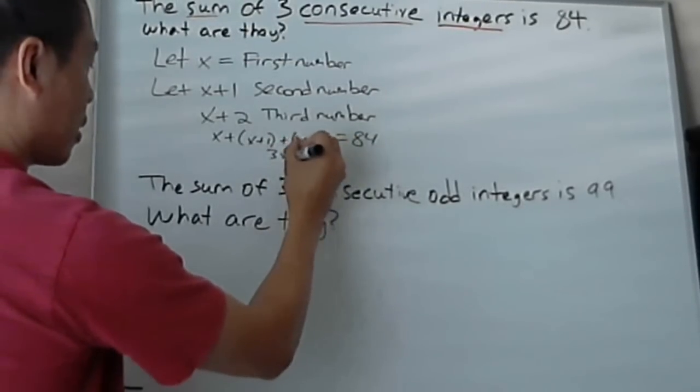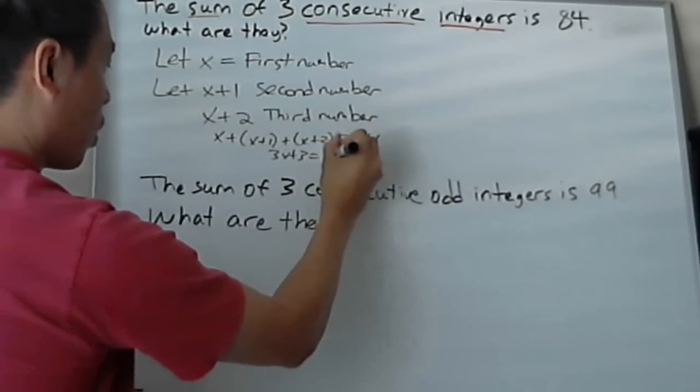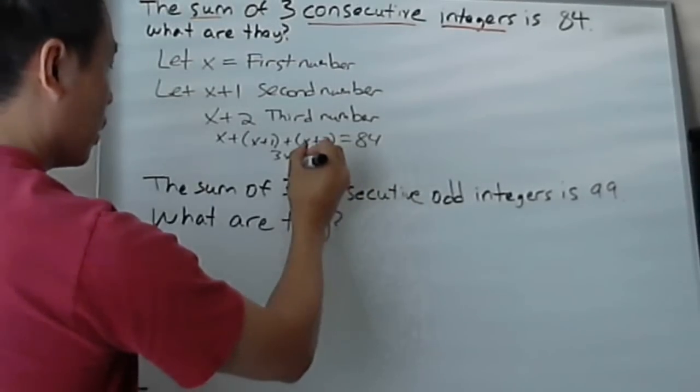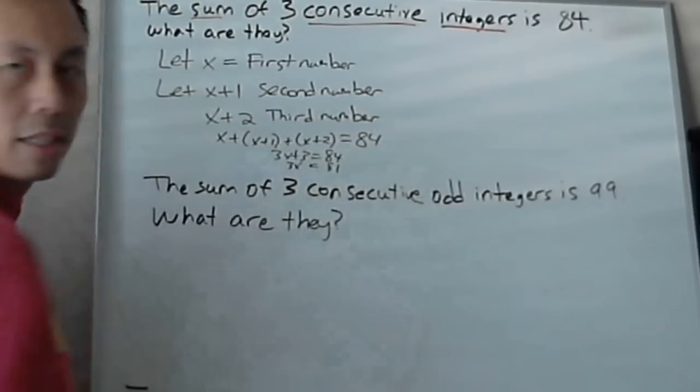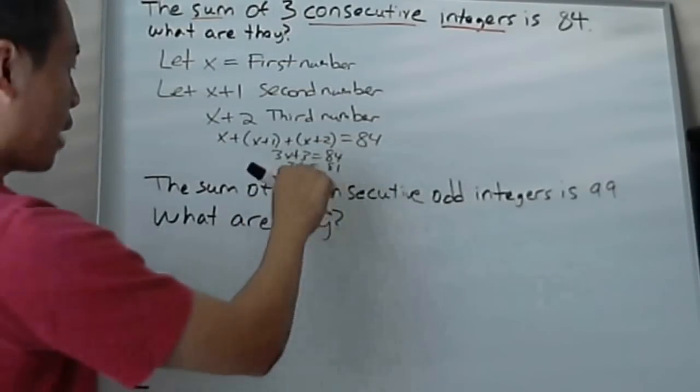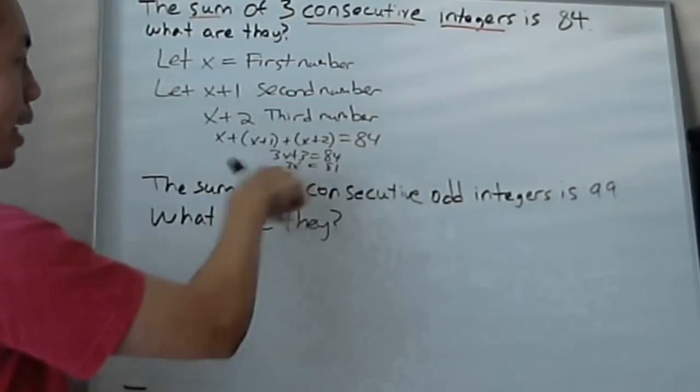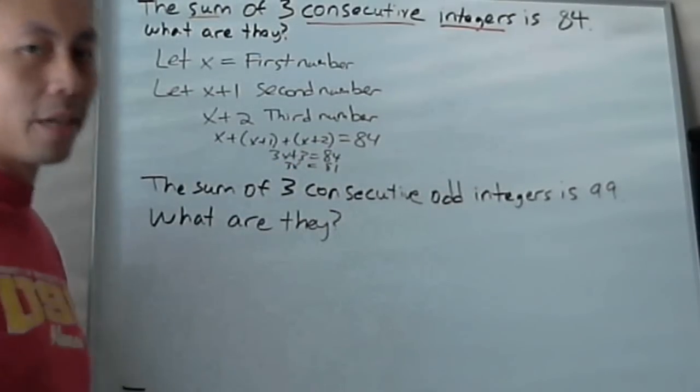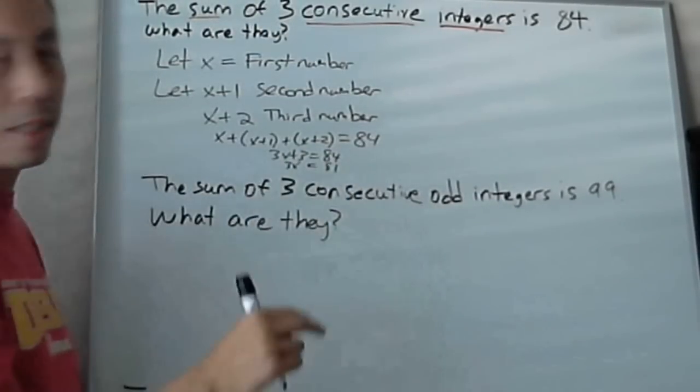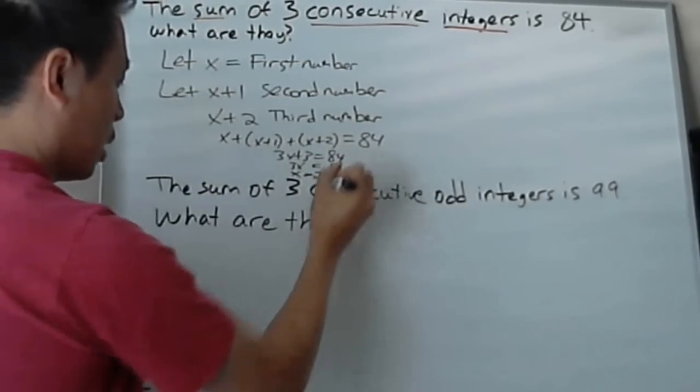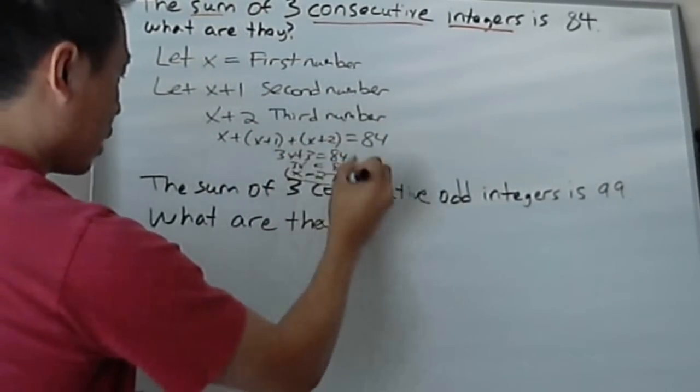Group the x's together. 3x plus 3 equals 84. And then subtract 3 on both sides and you'll get 81. And then you just divide 3 on both sides. Since 3x equals 81, 3 times x. If you don't understand how this algebra works, I'll have another video for you on how to do algebra in general. So you divide by 3 and you'll get x equals 27.